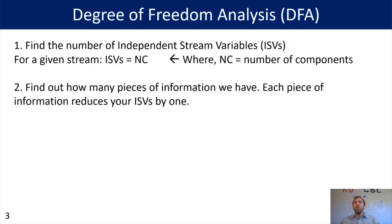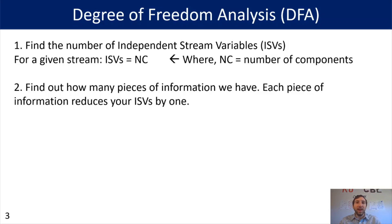You may be wondering: what is a piece of information? So that could be a molar flow rate, it could be a mass flow rate of one of our streams, it could be one of the component flow rates, or it could also be a mass fraction or a mole fraction for one of your streams. All of those are useful pieces of information, and each one of those would reduce your degrees of freedom by a value of one.